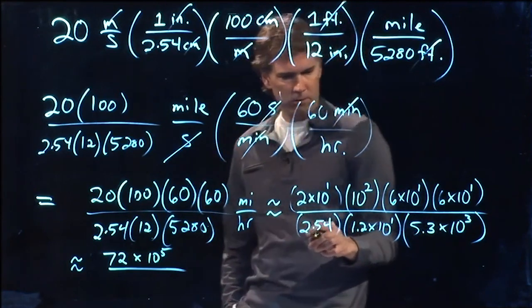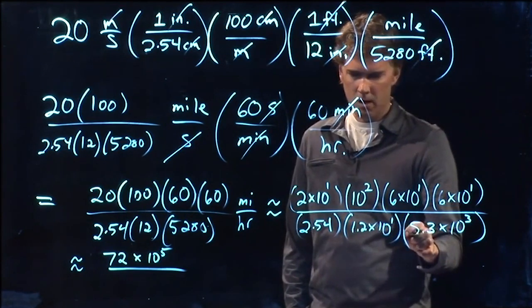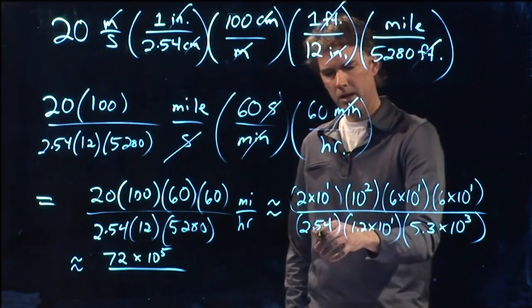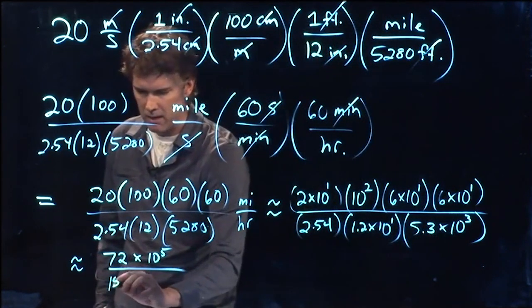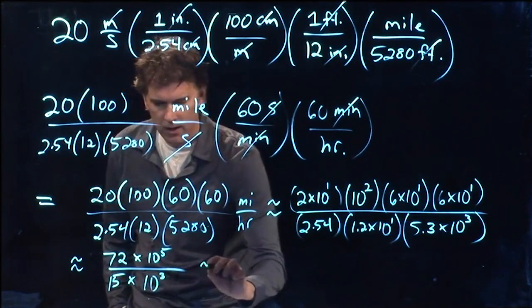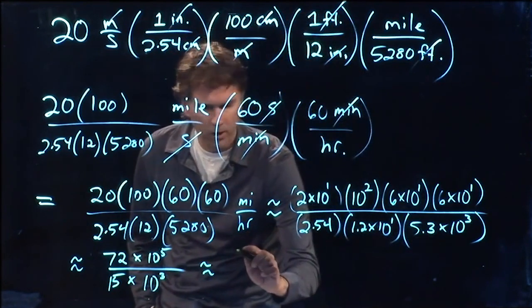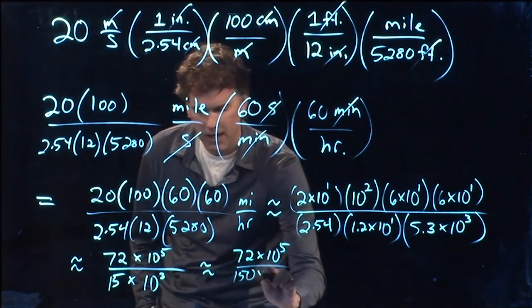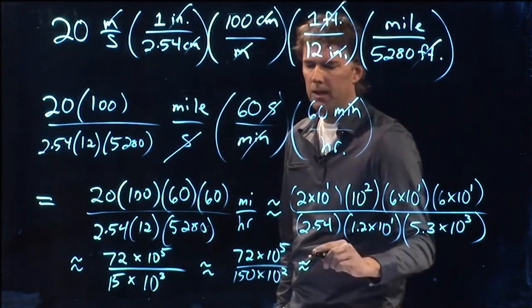Downstairs, what do we have? Well, we've got 2.5 times 1.2 times 5.3. That maybe is a little hard to do in your head, but let's just approximate it. Let's say this is a 3, this is a 1, and this is a 5. So that would be 15. And we have a 10 to the 3 down there. And so now we've got 72 over 15 or 72 times 10 to the 5 over 150 times 10 to the 2.